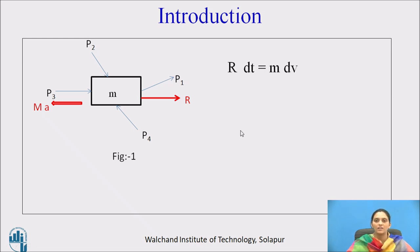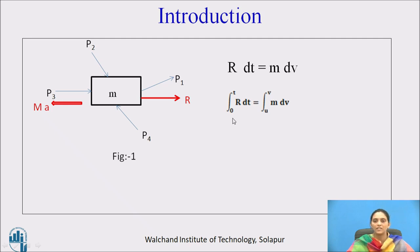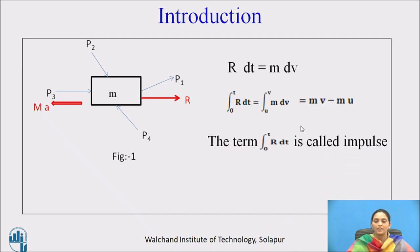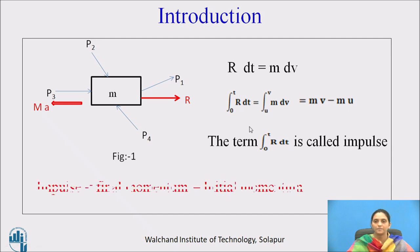Continuing with the equation R·dt = M·dV, we integrate both sides. For time, the integration limit is 0 to t, and for velocity, the integration limit is initial velocity U to final velocity V, since velocity varies from U to V in that time interval. After integration, we get M·V minus M·U. The term ∫R·dt is called the impulse, which is the product of force and time. Therefore, impulse is equal to final momentum minus initial momentum.